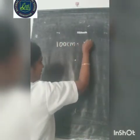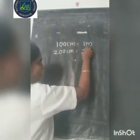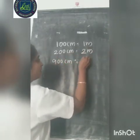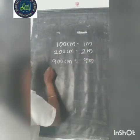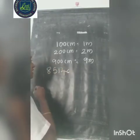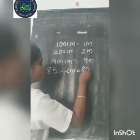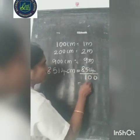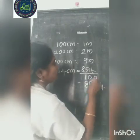We know that 100 centimeter is equal to 1 meter. Therefore, 200 centimeter is equal to 2 meter. And 900 centimeter is equal to 9 meter. And 8,514 centimeter divided by 100 equals 85.14 meter.